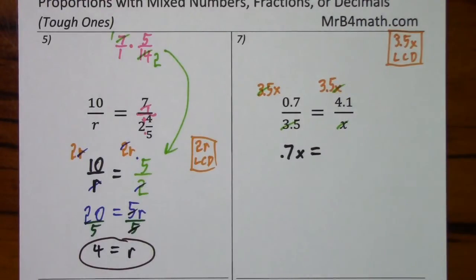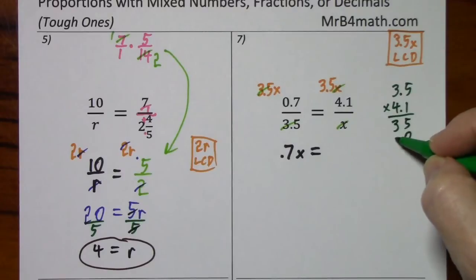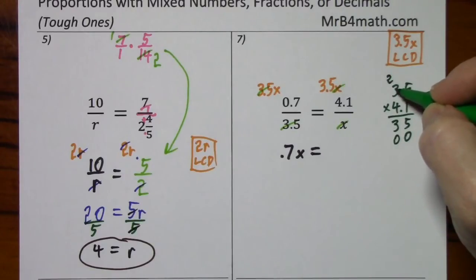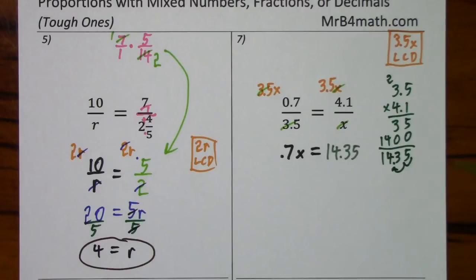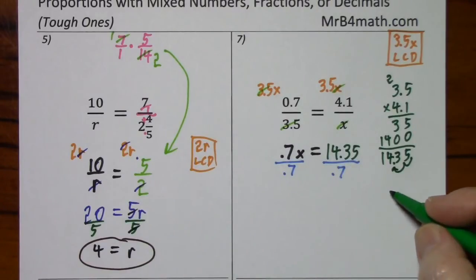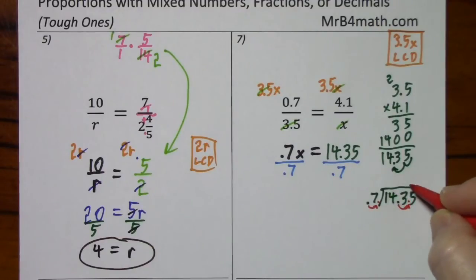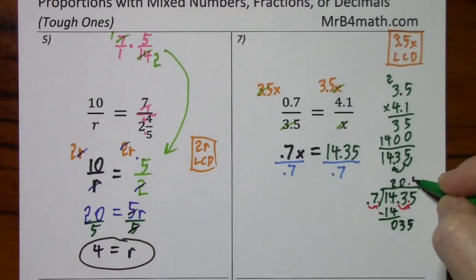3.5 times 4.1. Just calculate that right here. 12, 14. And you have two decimal places. You're trying to get x by itself. We'll divide by 7 tenths. And I think I can fit the division in here. 7 into 14. 7 into 3, 0. 7 into 3, 0. Bring down your next digit. 7 into 35 is 5. And that's 35. So we get 20 and 5 tenths.